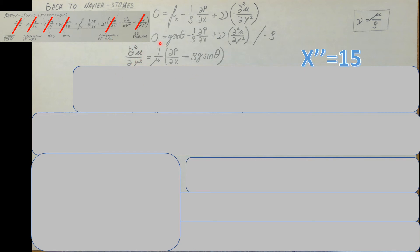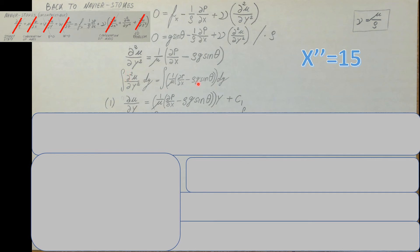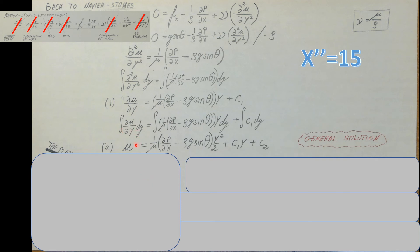This is the differential equation that describes our flow. We need velocity U by itself, so we need to take an integral of both sides two times. First integral of both sides results in the first derivative of U with respect to Y on the left, and on the right we have the massive constant times Y plus C1. We then take the second integral, which results in us finally arriving at U — the velocity profile we are seeking. On the right-hand side we have the constant times Y-squared over two, plus C1·Y, plus C2.